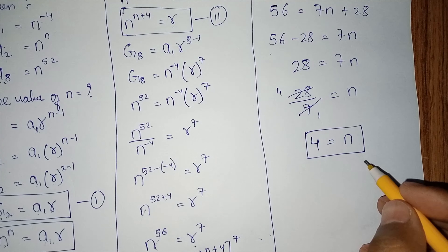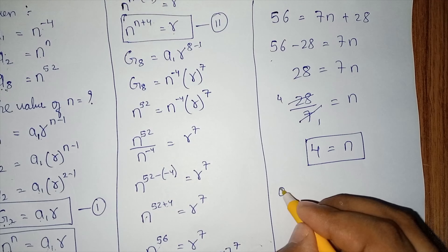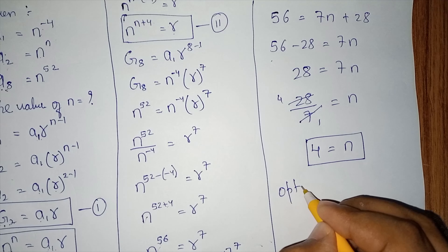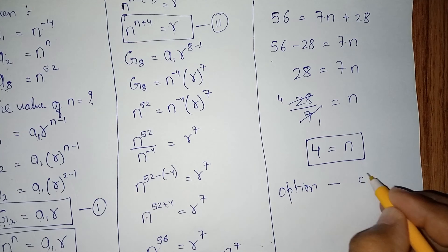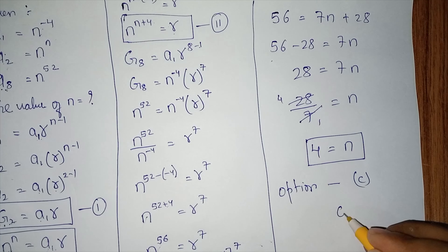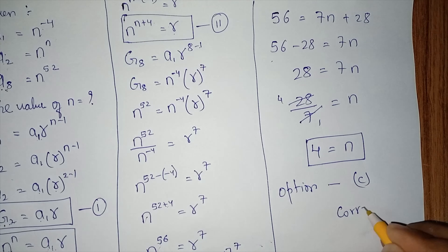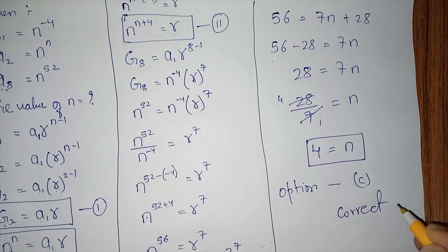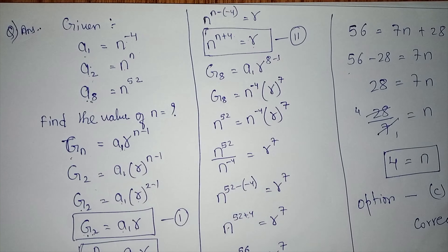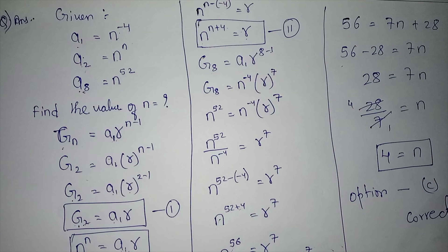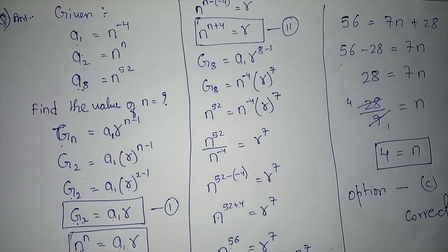So the value of n is 4. According to the options, option C is correct. If you have any doubts, you can rewatch the video. Thank you.